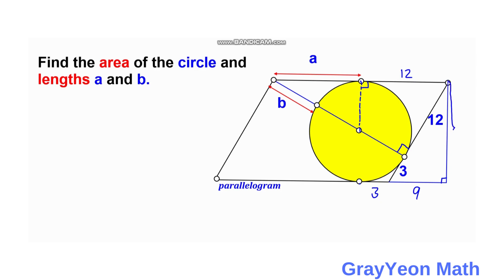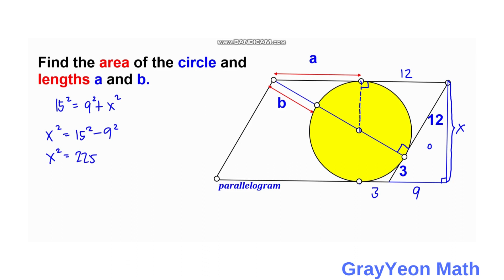This length is a leg of the right triangle, and the hypotenuse is 12 plus 3 equals 15. So we have: 15 squared equals 9 squared plus x squared, where x is the unknown leg. Therefore x squared equals 225 minus 81, which equals 144. Taking the square root of both sides, x equals 12 units.